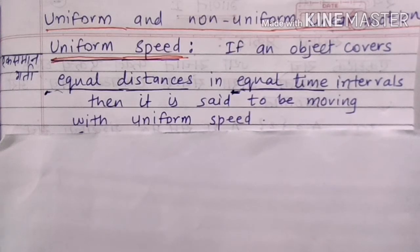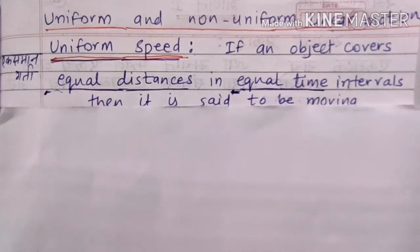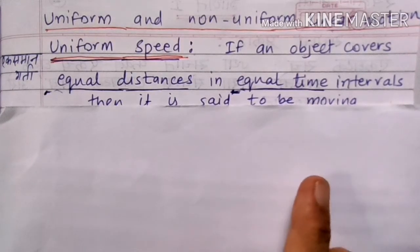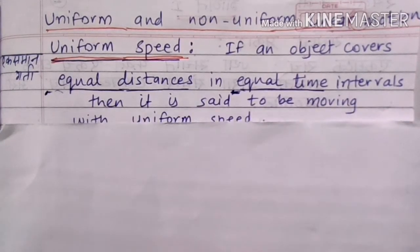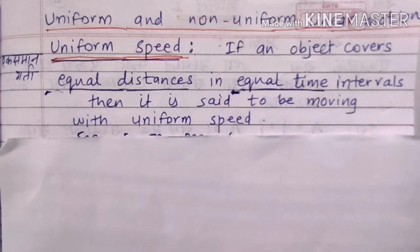Non-uniform motion or speed: if an object covers unequal distances in equal time intervals, then it is said to have non-uniform speed. See the example on page 4.